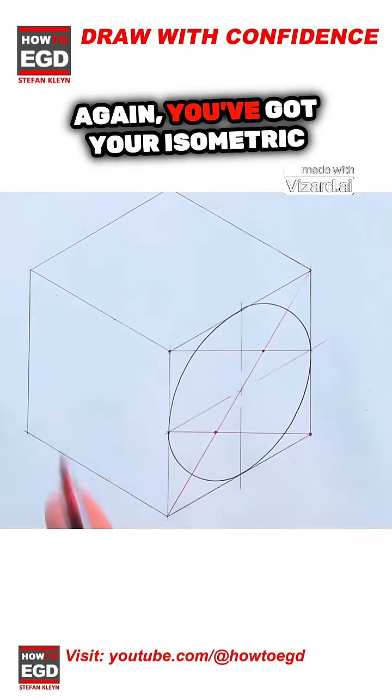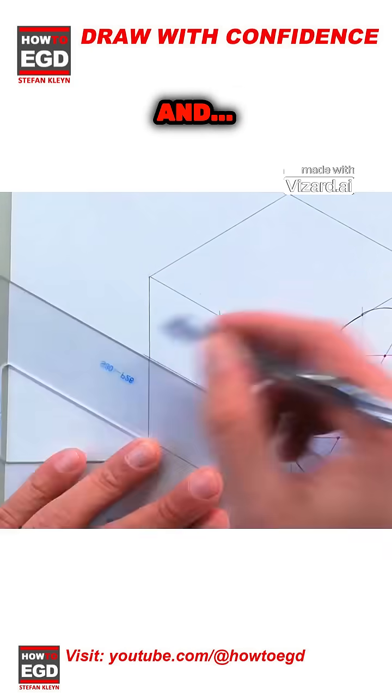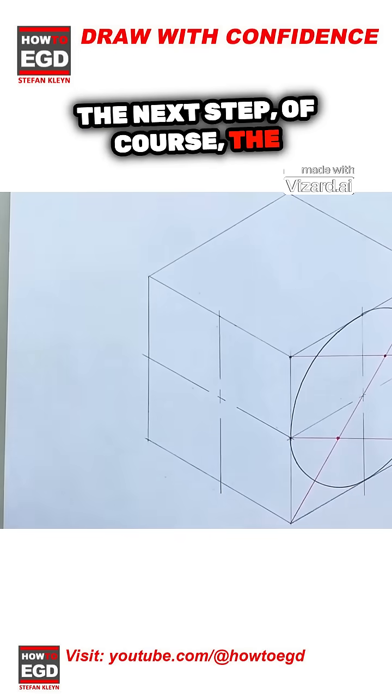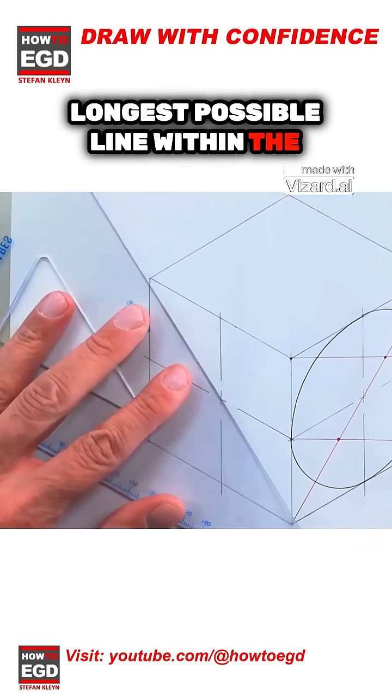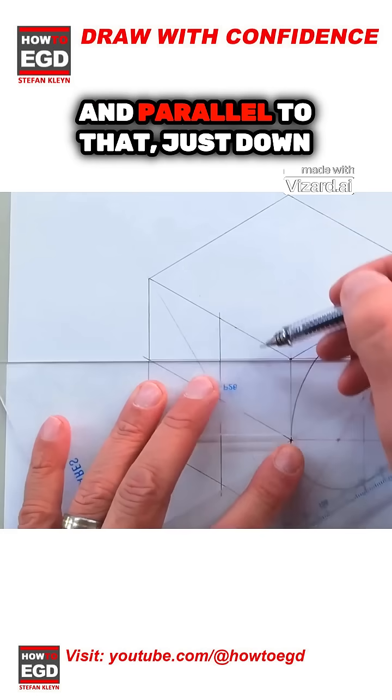Again, you've got your isometric square. Next step is your center lines, and the next step of course, the longest possible line within the square. Then from the obtuse to the opposite side and parallel to that, just down there.